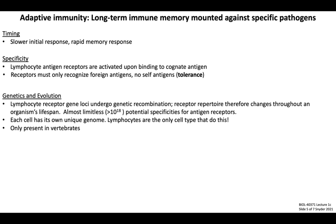Lymphocytes are subjected to a variety of selection processes during development that eliminate self-reactive antigen receptors to prevent autoimmunity, which we'll discuss later in lectures covering lymphocyte development and maturation. Antigen receptors are quite interesting from a genetic and evolutionary perspective, as the gene loci for these receptors actually undergo genetic recombination, meaning the receptor repertoire of the adaptive immune system changes over the course of an individual's lifespan. The recombination events result in a massive amount of potential specificities, allowing the adaptive immune system to be poised to respond to an entire universe's worth of potential pathogen antigens it hasn't encountered yet.